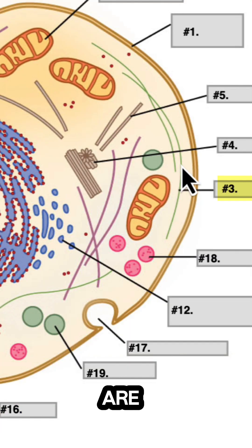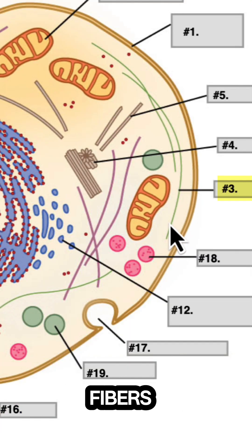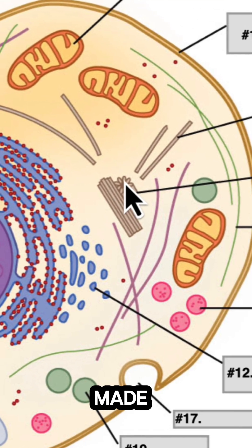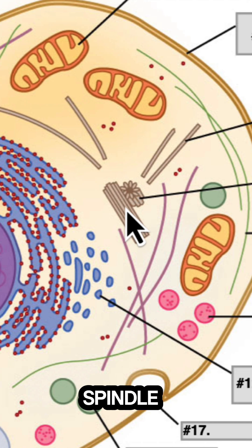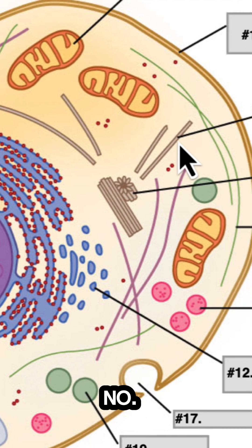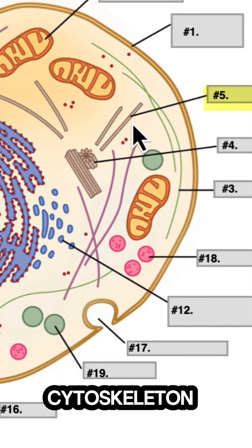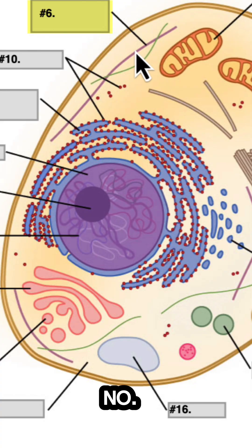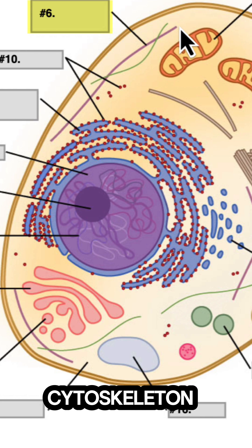Number three: these are part of the cytoskeleton and they are the thinnest fibers. Number four: these are made of the thickest fibers and they participate in assembling the spindle during cell division. Number five: the thickest fibers of the cytoskeleton. And number six: these are the middle-sized of the three fibers in the cytoskeleton.